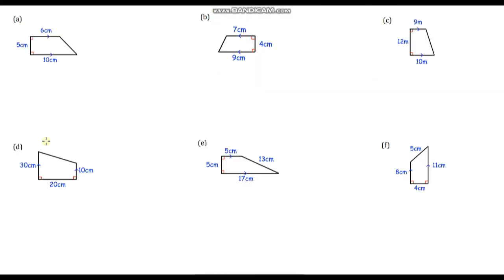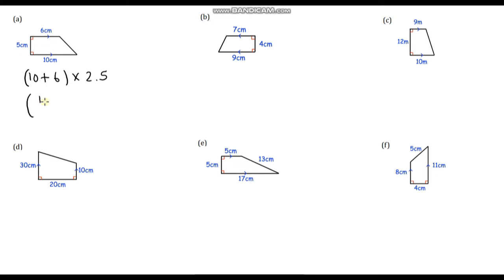Okay, so it's over to you now. Pause the video and see if you can calculate the area of these six trapezia. Let's go through them together. We're going to add the parallel sides: 10 plus 6. We could multiply by half of 5, which is 2.5, but it's slightly easier to do 10 plus 6, divide by 2, then times by our height. So 10 plus 6 is 16, divide by 2 is 8, and 8 times 5 is 40. So our answer is 40 centimetres squared.